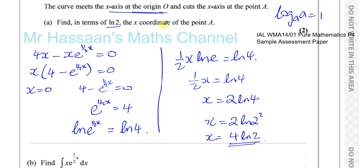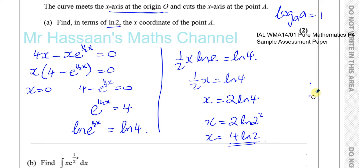They only ask for the x-coordinate of point A, not the full coordinates. If they wanted the full coordinates we'd write (4 ln2, 0), but here just the x-coordinate 4 ln2 is required. So that's Part A done.